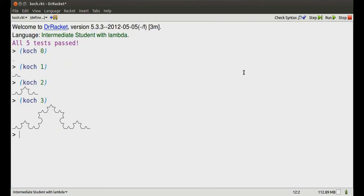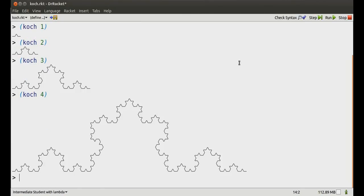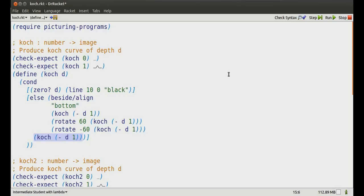Koch 4. Well, we need a bit more room. So I hit CTRL D. There's Koch 4 in all its glory. Now there's a problem with this definition.